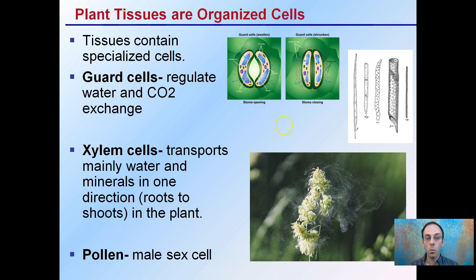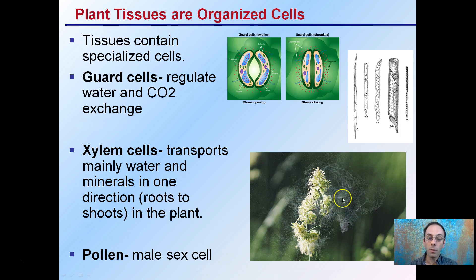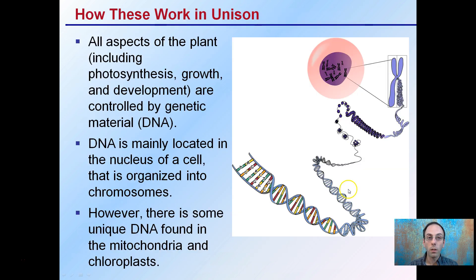Xylem cells transport mainly water and minerals in one direction — from the roots to the shoots, from the bottom of the plant to the top. And pollen is the male sex cells; we can see some here, caught in a little bit of the wind.